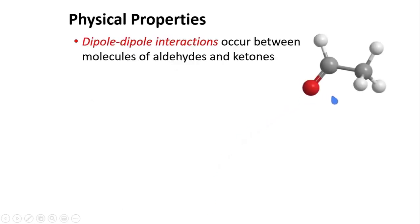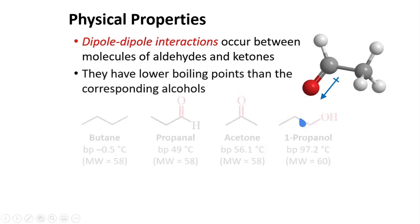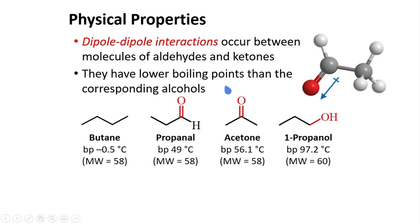Aldehydes and ketones have dipole moments because of the carbonyl group. The carbonyl group has an electronegative oxygen atom that pulls electrons towards itself — it becomes partially negative and the carbon becomes partially positive. This gives rise to dipole-dipole interactions between molecules, enabling a sufficiently higher boiling point compared to alkanes. Nevertheless, they have lower boiling points than the corresponding alcohols. Comparing acetone and propanal to propanol, their boiling points are relatively lower, but higher compared to butane.